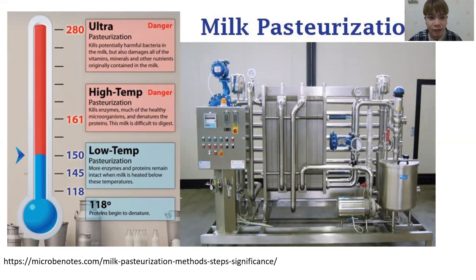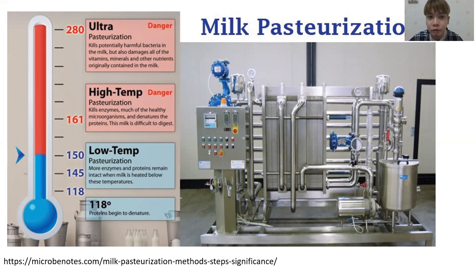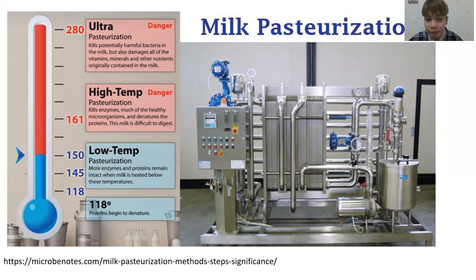For pasteurization, we can pasteurize using low temperature, high temperature, and ultra high temperature. That's why there's Ultra High Temperature — UHT. We also have High Temperature Short Time — HTST. And then we have Low Temperature Long Time — LTLT.